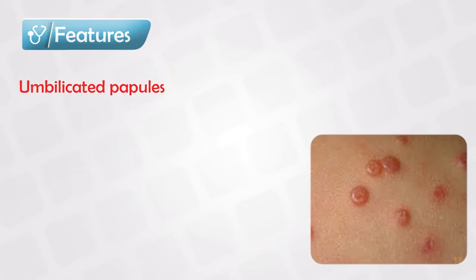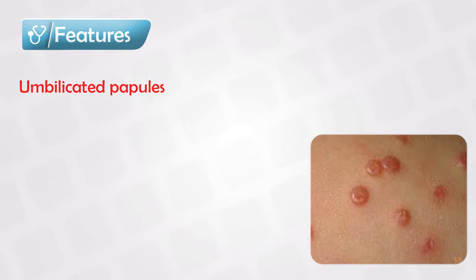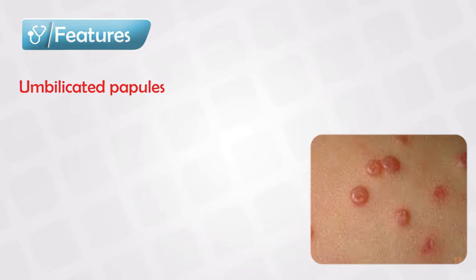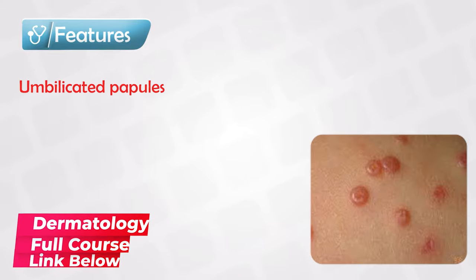It's one of the few umbilicated papules, which means that there will be a growth similar to a papule, and there will be something resembling an umbilicus at the middle of the papule. Again, this is highly specific and highly characteristic.